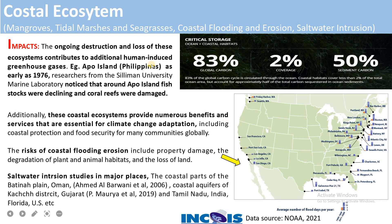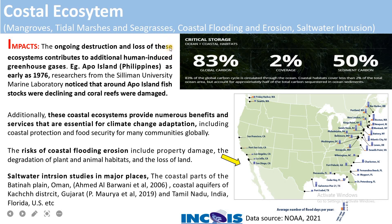When coastal ecosystems get damaged, the ongoing destruction and loss of these ecosystems contributes to additional human-induced greenhouse gases. Whenever we destroy coastal systems for man-made or other purposes, we lose the carbon sinks that absorb excess carbon released into the atmosphere, thereby causing further warming. This shows how significant coastal ecosystems are in carbon storage.